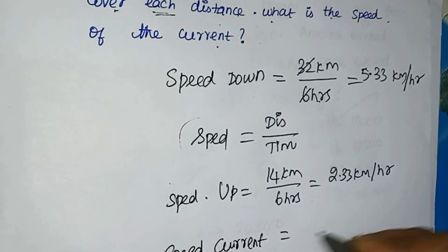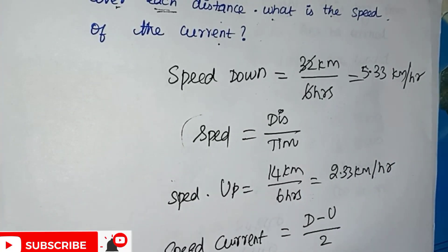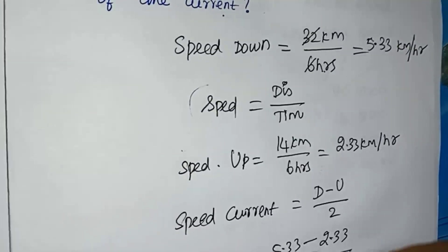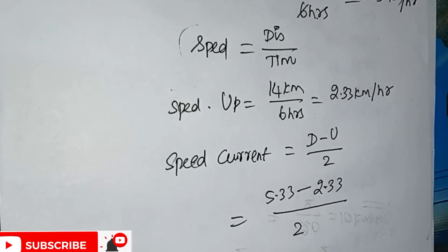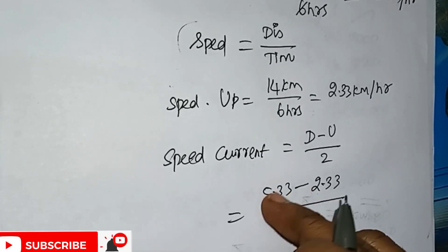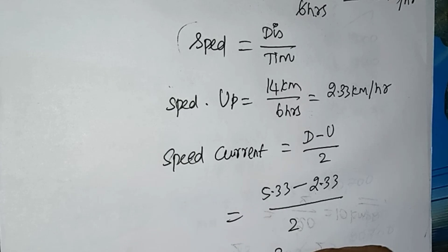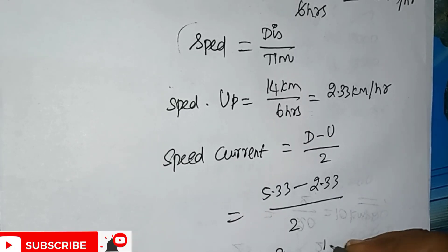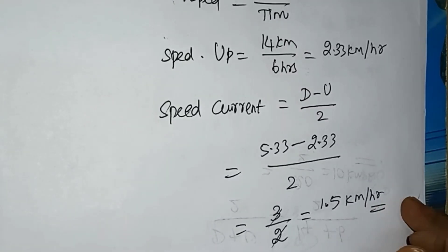The formula for speed of the current is downstream minus upstream divided by 2. Downstream is 5.33 minus upstream 2.33, divided by 2. The 0.3 decimals cancel, leaving 3 divided by 2, which equals 1.5 km per hour. The answer is 1.5 km per hour.